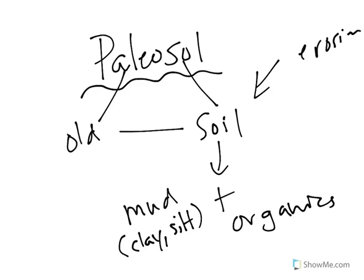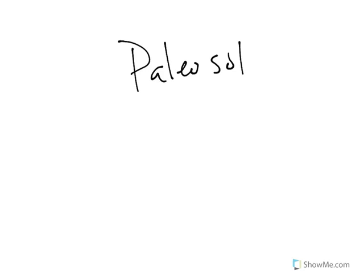Here's the important thing: if we are talking about a paleosol, we know that it can only form from erosion, because that's how our soil layers accumulate.